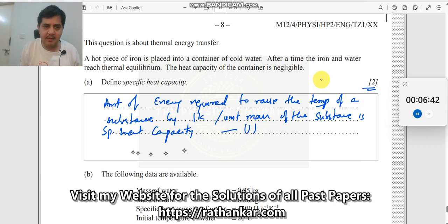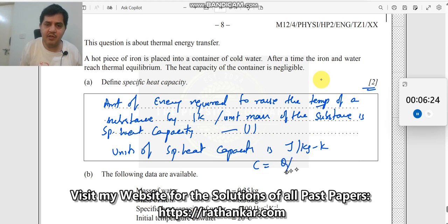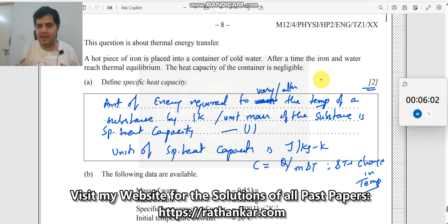This will account for one mark. Then, for the second mark, you can also mention units of specific heat capacity is joules per kg Kelvin, or you can also say C is equal to Q by M delta T, where delta T is change in temperature. Here I made a mistake. Amount of energy required to not raise, you can say to vary or alter, because when I say raise it means you are only heating. When you say decrease, you already have a substance which is at a given temperature and you want to decrease it. So in both cases it is used. You can only say vary or alter.